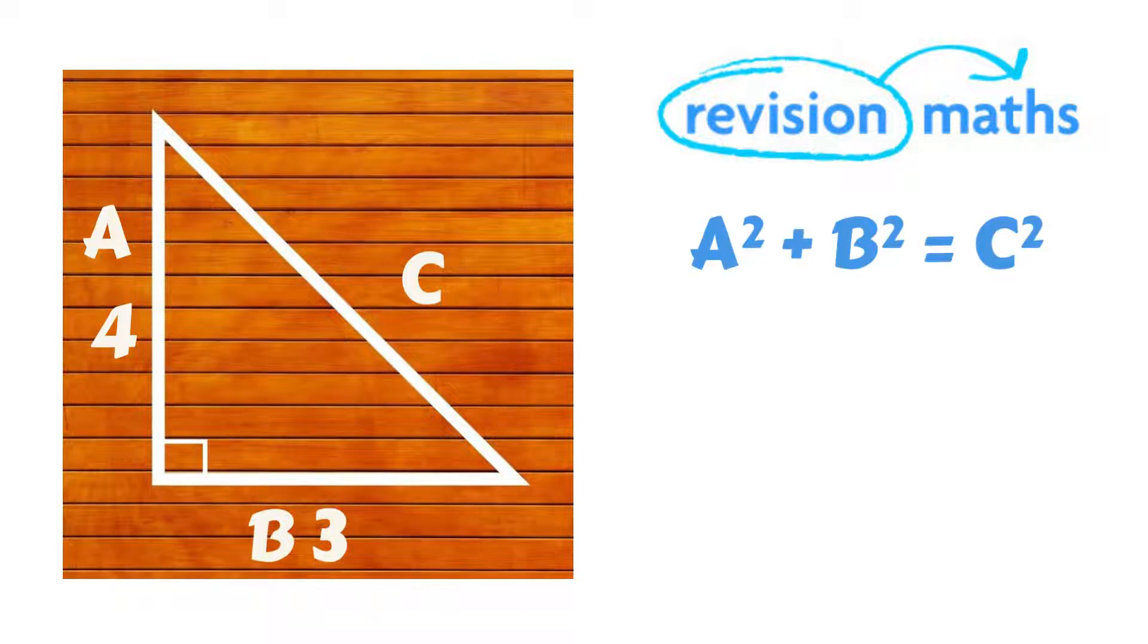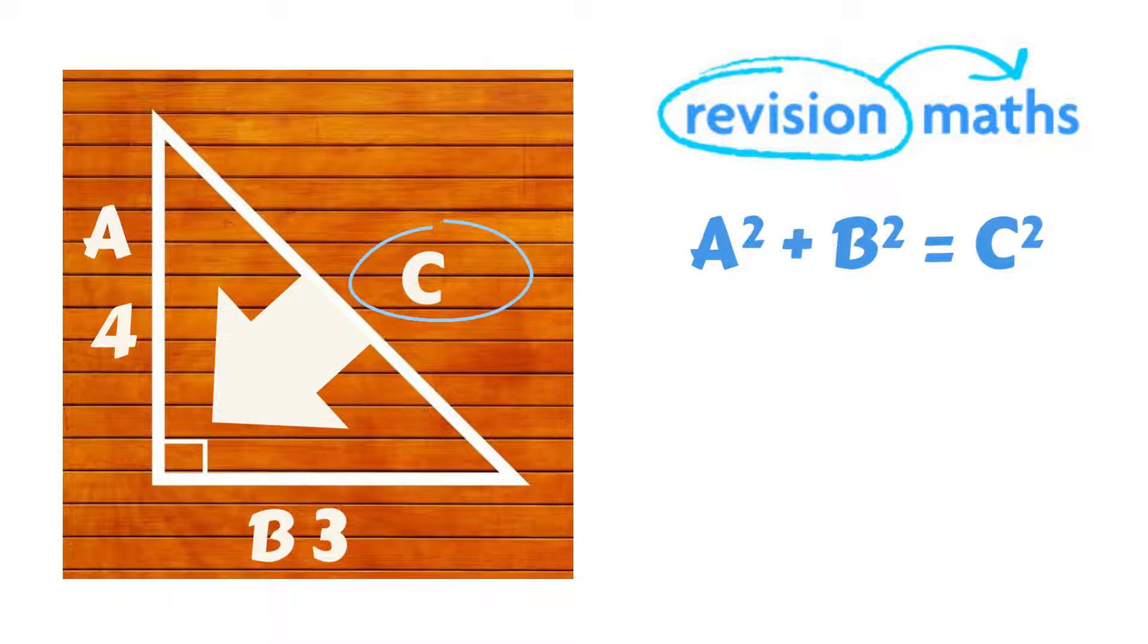A, B and C are three sides of the triangle with C always being the longest side which is known as the hypotenuse. And this is always opposite the 90 degree right angle.